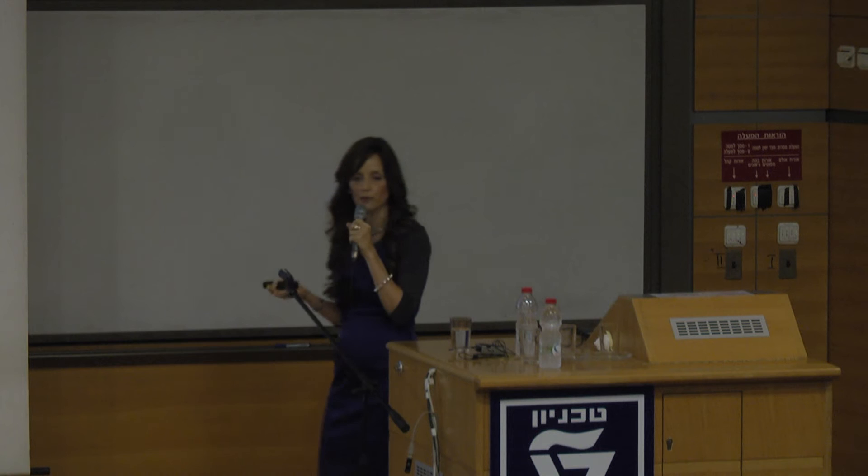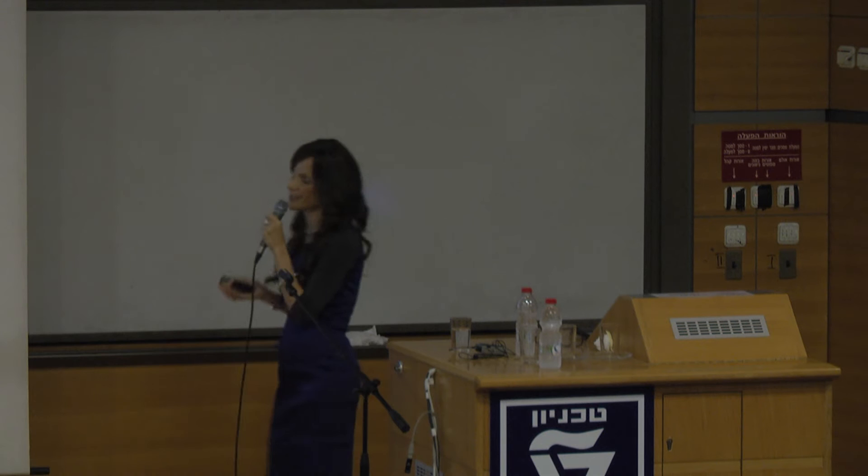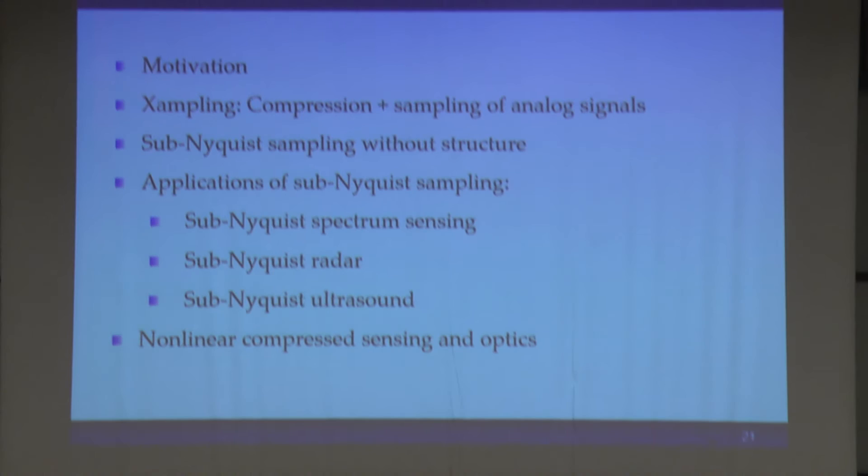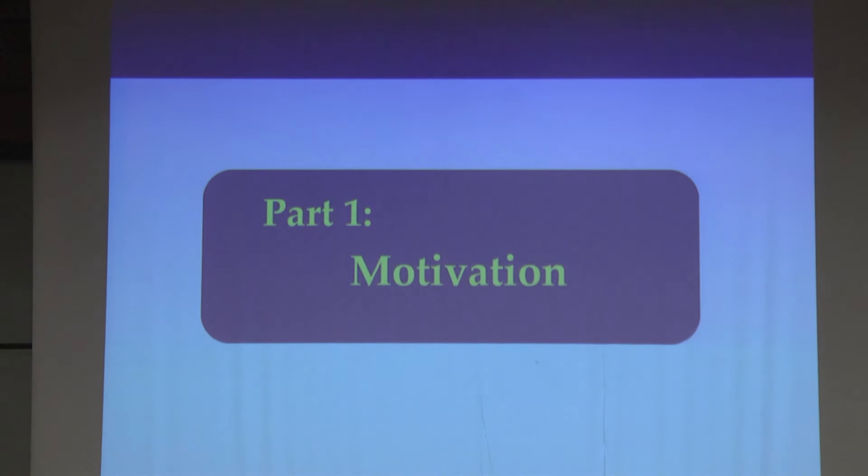Here's an outline of the rest of the talk. I'll start by giving motivation, looking at a variety of different examples where naturally structure exists. We'll then introduce the sampling paradigm, which is basically compression and sampling performed simultaneously. We'll then talk about a very interesting ongoing developing area — how we could get sub-Nyquist sampling even in examples where there is no structure. And finally, we'll mention a little bit of the application, and end a few minutes by talking about how we could extend these ideas to non-linear samples, which is very important in particular in the context of optics.